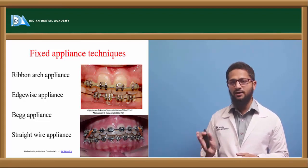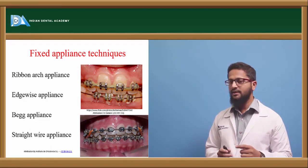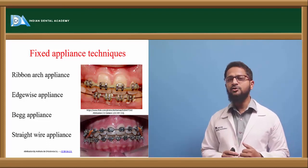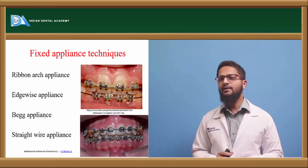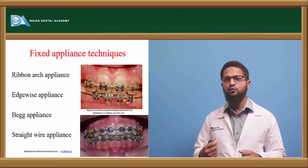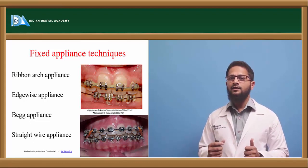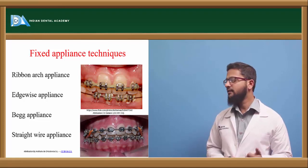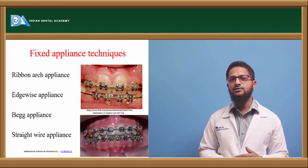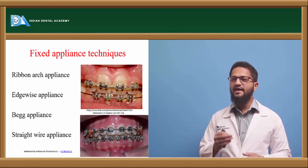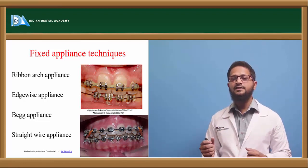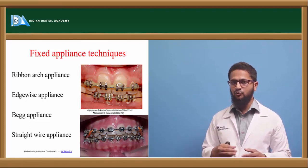The Begg appliance makes use of ribbon arch brackets and a differential force technique, achieving tooth movement primarily through tipping. Mesiodistal movement is somewhat difficult and requires incorporation of various helices, loops, and wire fabrication, making it technically demanding. Finally, the straight wire appliance, introduced by Andrews, is so named because everything is pre-programmed in the bracket itself — only a plain wire is inserted and all tooth movements are achieved through the pre-programmed bracket prescriptions.